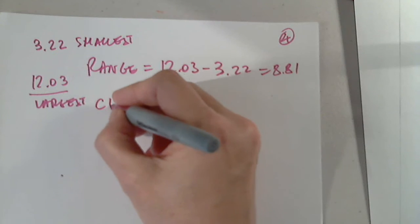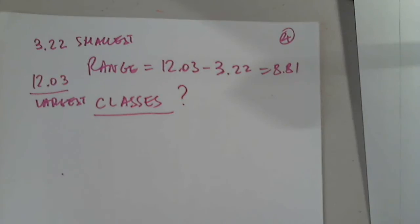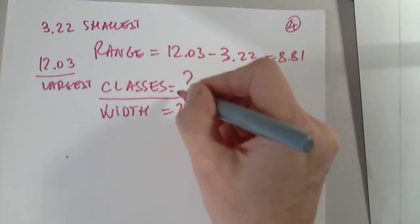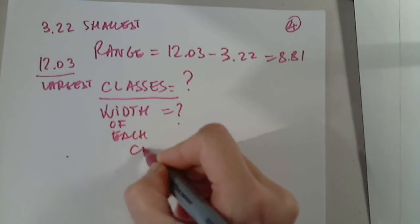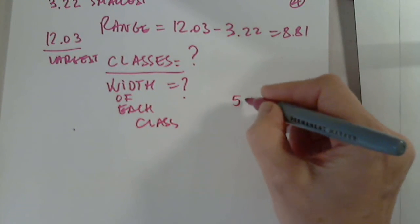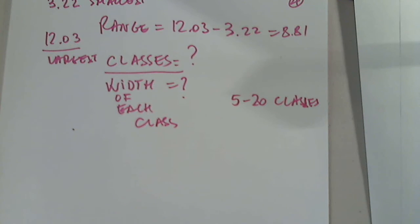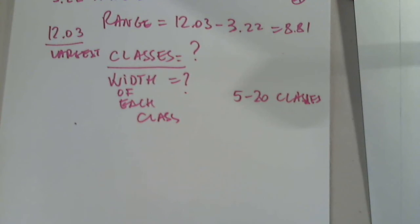Now I'm asking myself how many classes should I select, should I use? Because based on the number of classes, I will determine the width of the class, of each class. And remember normally between 5 and 20 classes. So we do have several options here. Looking back at the data, so I'm going to share again so we can look at the data together. Let's see, before we make a decision on how many classes. Let's see how many entries I have, let's say between 3 and 4. Between 3 and 4, I have 16 entries, right? Between 3 and 4.